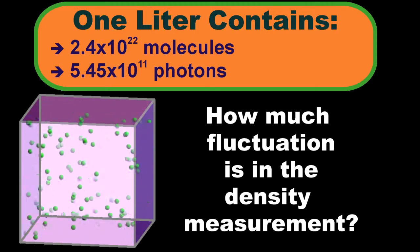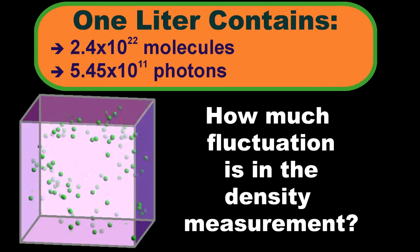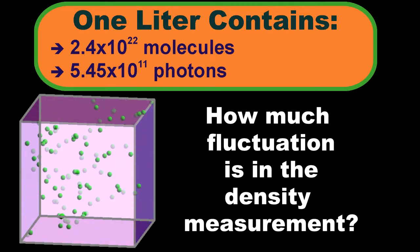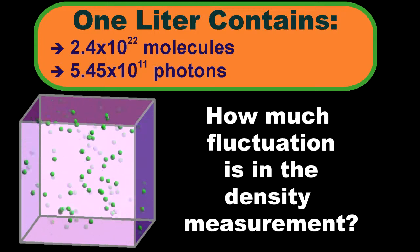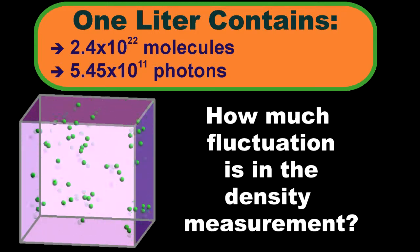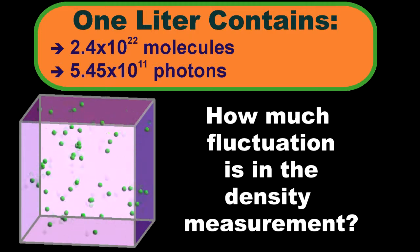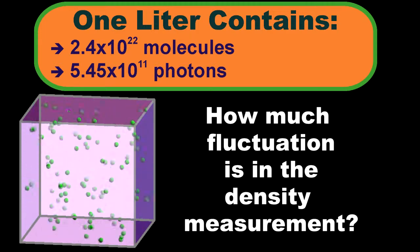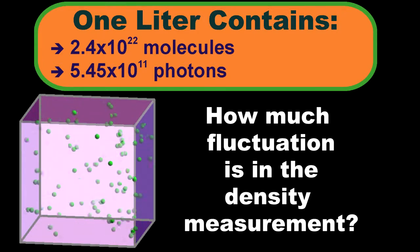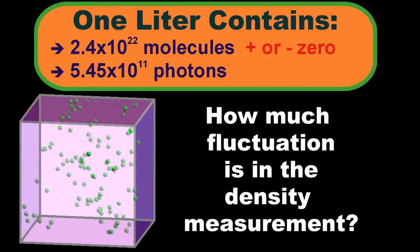In chemistry class, you learn that the number of atoms doesn't change in ordinary chemistry conditions. We say that the number of atoms is conserved. It's always the same. If there are no chemical reactions, then we can also say that the number of molecules is conserved. Therefore, the variance in the number of molecules in one liter of gas is zero.